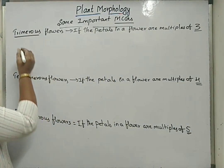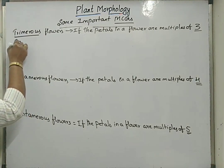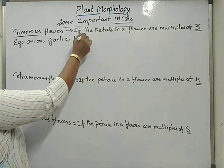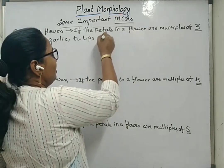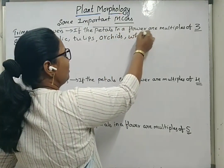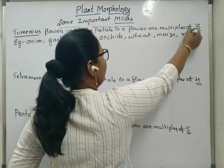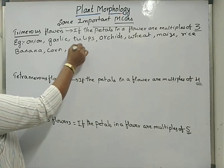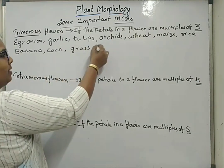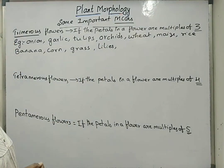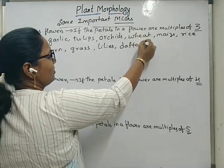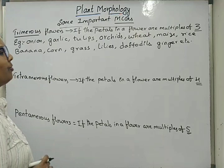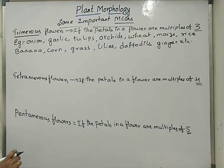Examples are important under trimerous, tetramerous or pentamerous types of flowers. Examples under trimerous we can write: onion, garlic, tulips, orchids, wheat, maize, rice, banana, corn, grass, lilies, daffodils, and ginger. These are some of the important examples that are being asked under trimerous conditions of flowers.